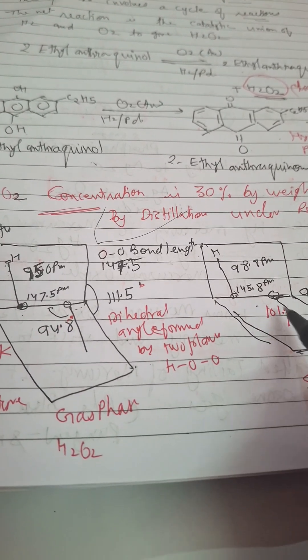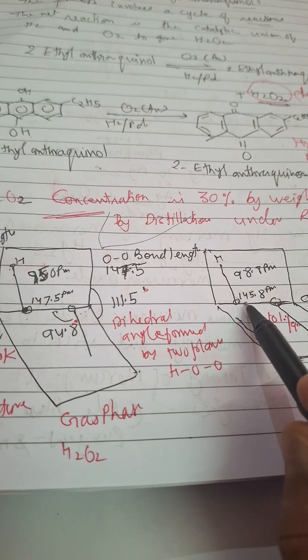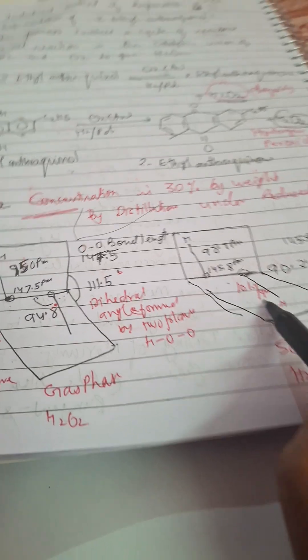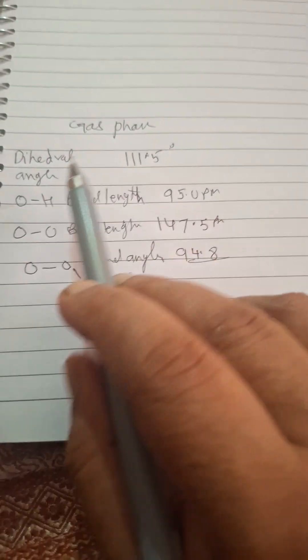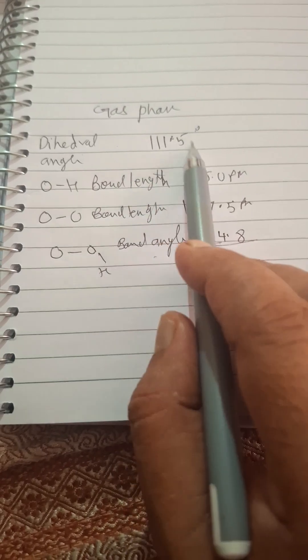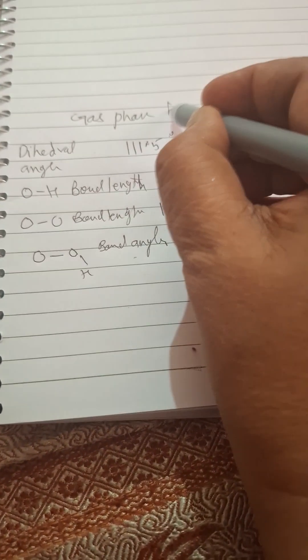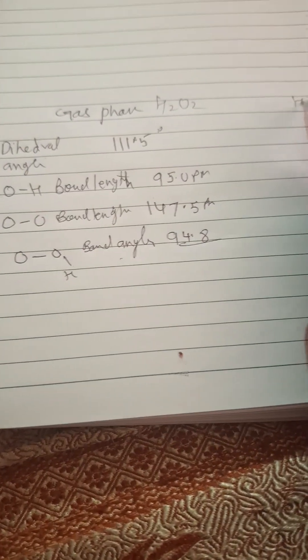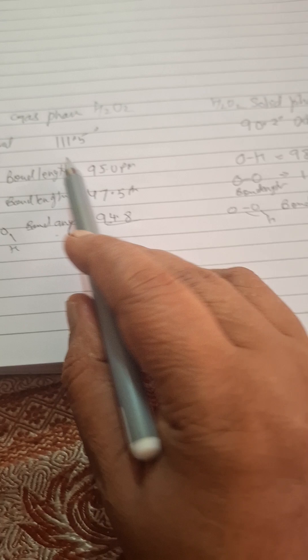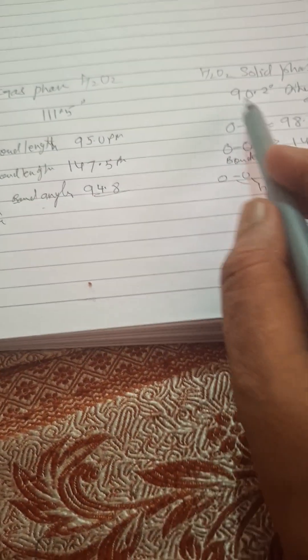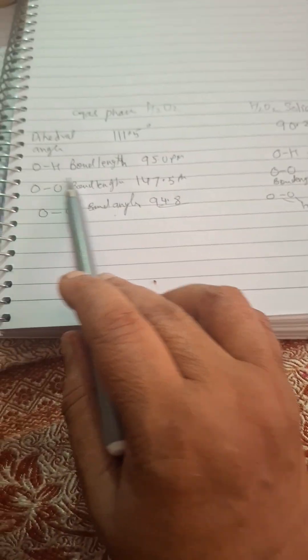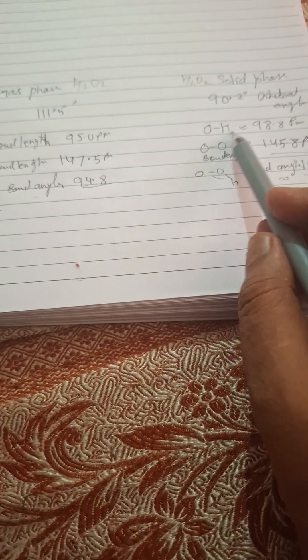The dihedral angle 90.2 and the OH angle is 101 degrees. So in gas phase dihedral angle 111.5 degrees for H2O2 and in solid phase 90.2. Bond length of OH is 95.0, OH bond length 98.8 picometer, O-O bond length here 147.5, here 145.8 picometer.